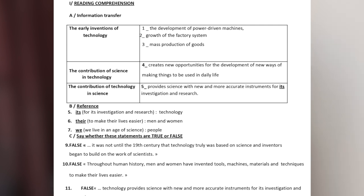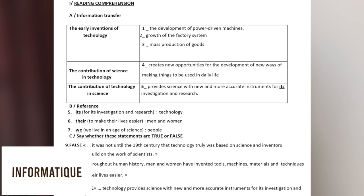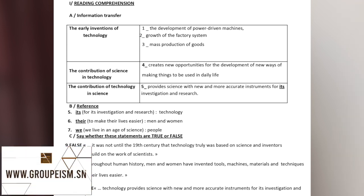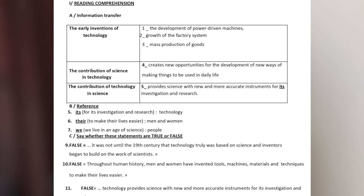Exercise D: find in the indicated paragraphs words that are similar in meaning — synonyms — of 'exact' and 'transform.' When we say words similar in meaning, we mean synonyms. If we mean contrary, we talk about antonyms — synonyms mean similar meaning, antonyms mean contrary meaning. Work in pairs, check your answers. For number nine, it is false. Justification: 'It was not until the 19th century that technology truly was based on science and inventors began to build on the work of scientists.'